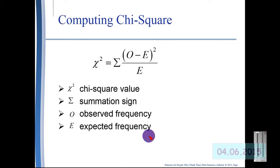Here in slide 6, we can see what really is a fairly simple equation. The chi-square value is equal to the sum of the observed frequencies minus the expected frequencies squared, and then all that divided by the expected frequency.